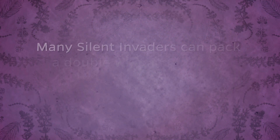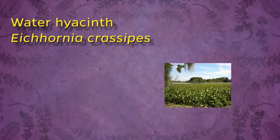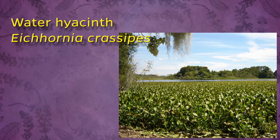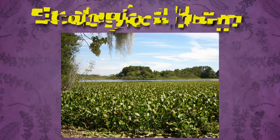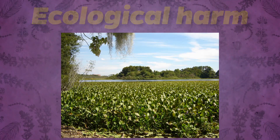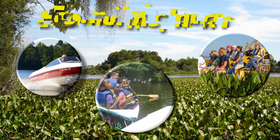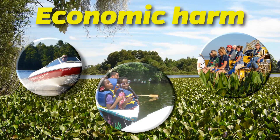Many silent invaders can pack a double whammy of both environmental and economic harm. When left alone, water hyacinth reproduces so fast that it can double its number in only two weeks. It can completely cover a river or lake and reduce the amount of oxygen available for fish and animals living in the water. It also prevents boaters from using lakes and rivers, and can be expensive to control.